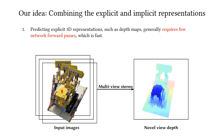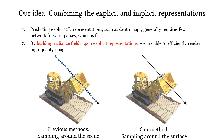To solve the problem, we propose to combine the best of the explicit and implicit representations. Our observation is that predicting explicit 3D representations, such as depth maps, typically requires few network forward passes, which is fast. By building the radiance fields upon explicit representations, we are able to render high-quality images efficiently.